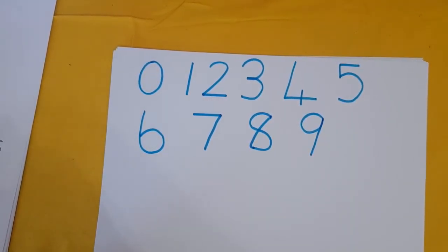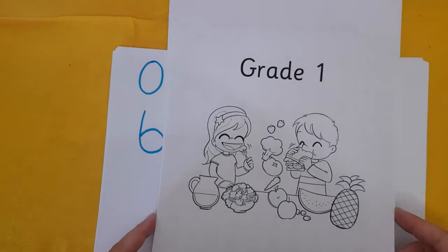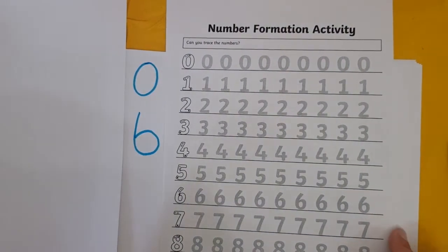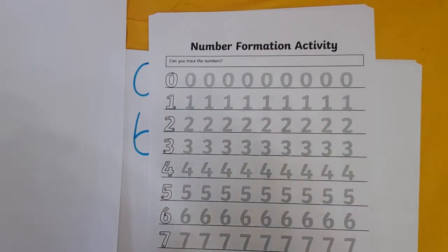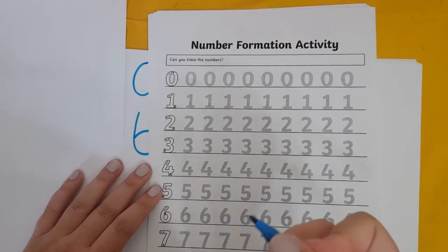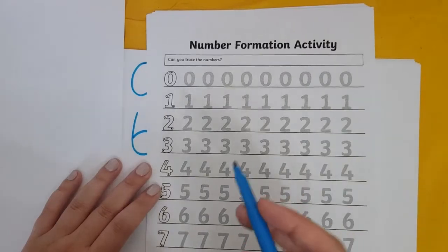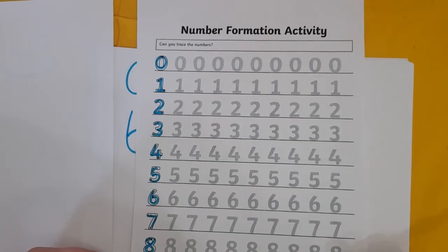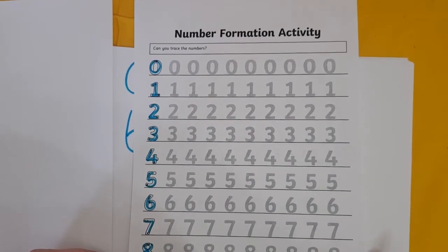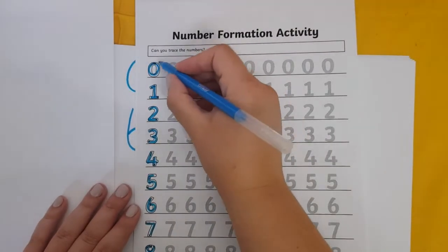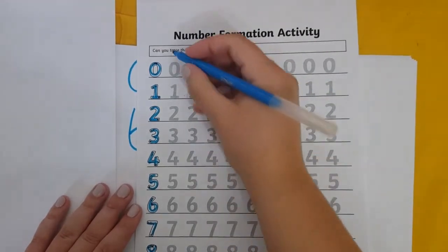So now we have reminded ourselves how we make our numbers. We are going to go into our grade 1 book and turn to the very first activity that says number formation activity. Can you trace the numbers? All you need to do is take a pencil or a pencil crayon and trace the numbers. Just follow the lines they give you and trace them all.